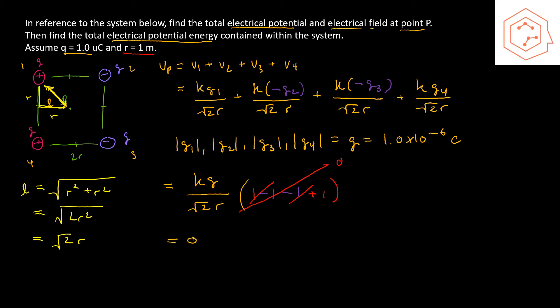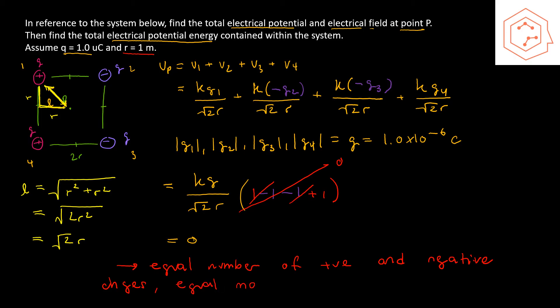When you get symmetries like this — an equal number of positive and negative charges of equal magnitude all at the same distance from a common point — this type of symmetry gives a zero electrical potential.